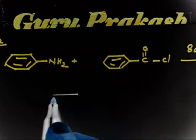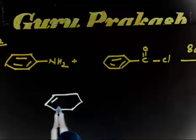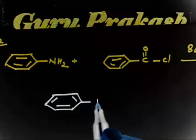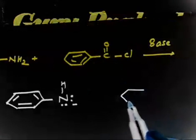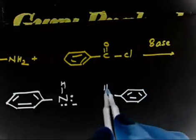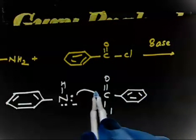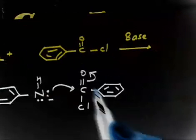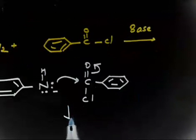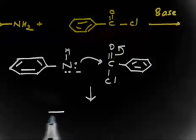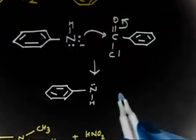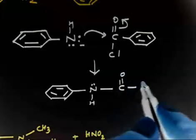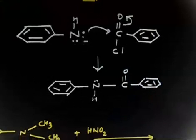You are right. You first take NH₂ and the base takes H⁺ to make NH⁻. On the next step, we have the C=O and Cl of the acid chloride. The NH⁻ attacks, the C=O opens, and then Cl leaves. So the final product will have N-H, then C=O, and then the Ph group on the other side — a simple amide product.